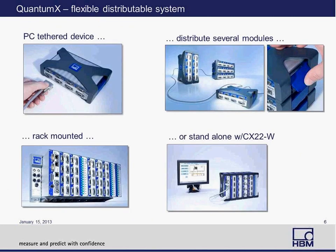QuantumX modules are primarily used as a device tethered to a PC via Ethernet cable. But there are also rack-mounted architectures where you can have up to nine different QuantumX modules mounted together. You can also have distributed architectures where clusters of modules are connected via Ethernet and accessed from a desktop or laptop PC on the network. The CX22W is a Windows-embedded computer that can run various software, and with battery power it can run standalone, acquire data, and broadcast data over the Internet.